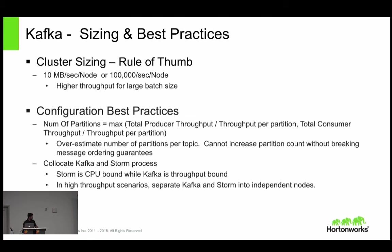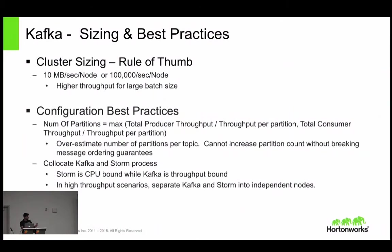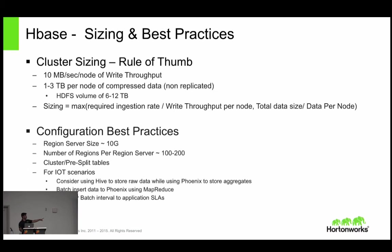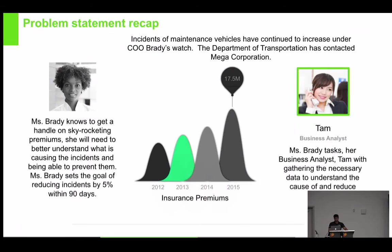Let's talk about sizing. For sustained throughput of 50 megabytes per second and thousands of events per second, you can use one to two HDF or NiFi nodes with eight cores. NiFi doesn't require a lot of memory. Kafka handles 10 megabytes per second per node. Storm can handle 100,000 events per second per supervisor node. Megacorp had 5,000 trucks, and we needed to save just $1,000 per truck to arrive at $5 million annually. To size the cluster, we need to account not only for data storage but also intermediate data and compression.